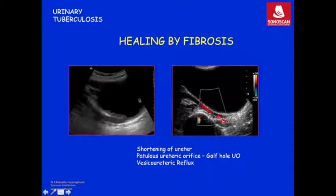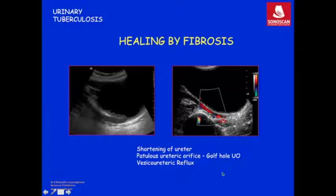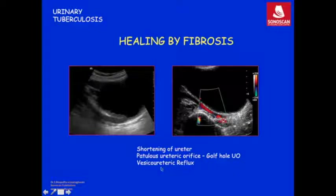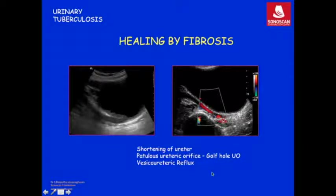Fibrosis of the lower ureter and the ureterovesical junction results in pulling up of the ureter, seen as a patulous ureteric orifice, described on cystoscopy as a golf-hole ureteric orifice. Because of this fibrosis, the ureteric orifice becomes patulous resulting in vesico-ureteric reflux, which is demonstrated here by color Doppler showing flow toward the transducer — indicating flow from the bladder into the ureter.